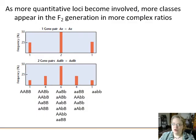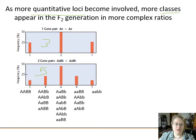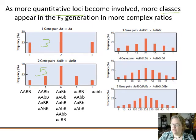As more quantitative loci get involved — as more genes get involved — more classes appear in the F2 generation in more complex ratios. With just one gene pair you get three categories. With two gene pairs you're up to five categories, depending on how many additive alleles are contributing to the phenotype. With three gene pairs you've got seven categories, then nine, then eleven — and this just gets more and more looking like a quantitative curve.